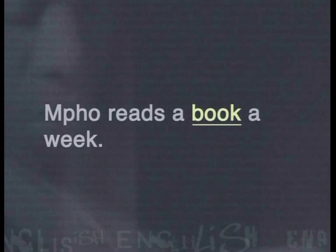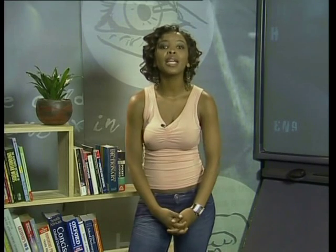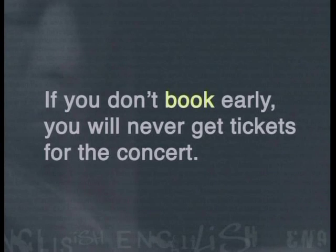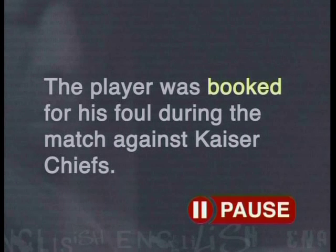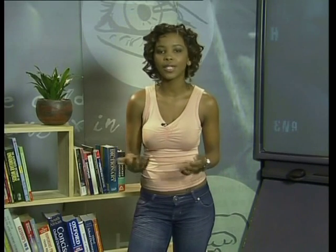If meaning depends on the context, let's see how the meaning of a word can change depending on the context. In the sentence 'Mpa reads a book a week,' a book is a noun — something you read. But depending on the context, book has other meanings. Look at this example: 'If you don't book early, you will never get tickets for the concert.' In this case, book does not mean something that you read. Can you work out from the context what it means and what part of speech it is? Here's another version: 'The player was booked for his foul during the match against Kaiser Chiefs.' Can you work out what booked means here, and what part of speech it is?